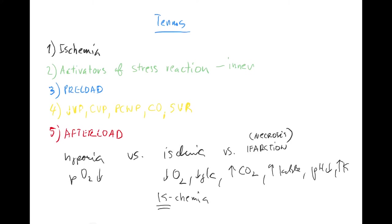Basically, where can I have ischemia? In any tissue that is blood-dependent: gut, muscles, liver, kidneys, heart, brain. I won't have ischemia of nails or enamel. The same applies for infarction — any tissue that can have ischemia can have infarction if the ischemia goes longer. It always depends on the metabolic rate: cells that are very oxygen- and glucose-dependent will die earlier.